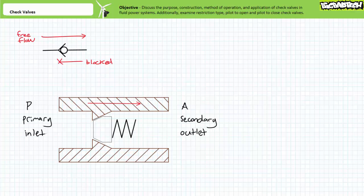the check valve wouldn't seat properly and would allow a degree of leakage in the ordinarily block direction. For this reason, most check valves employ a self-guided poppet that easily seals even after reassembly. Regardless, the schematic symbol still uses the ball and seat symbol. Schematically, free flow pushes the ball off the seat. Block flow pushes the ball onto the seat.